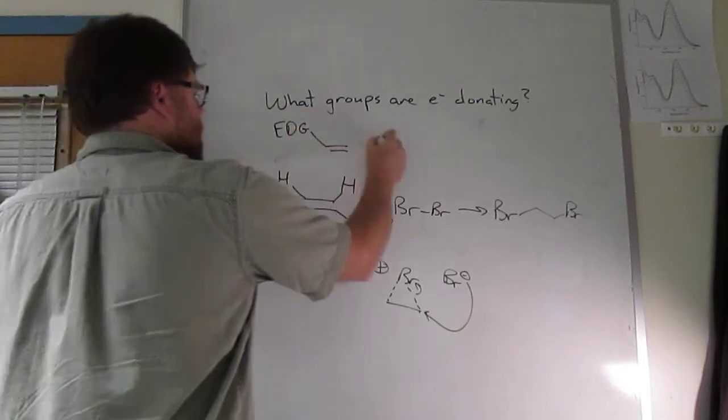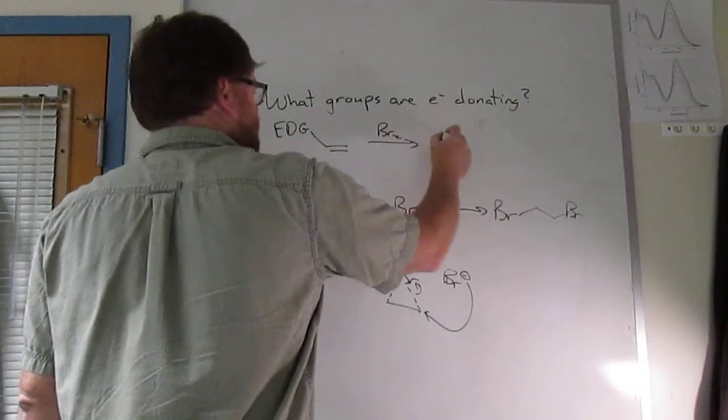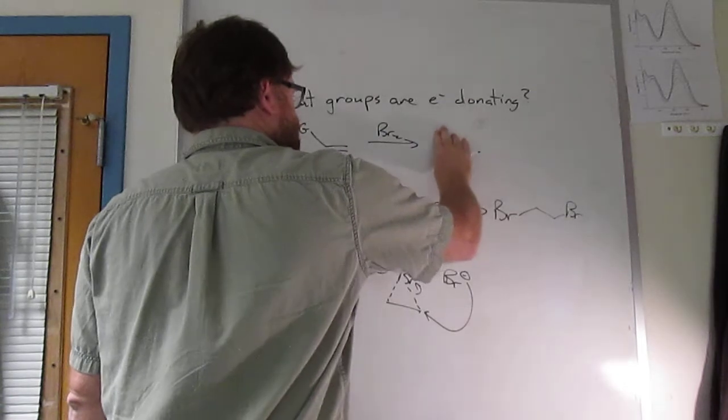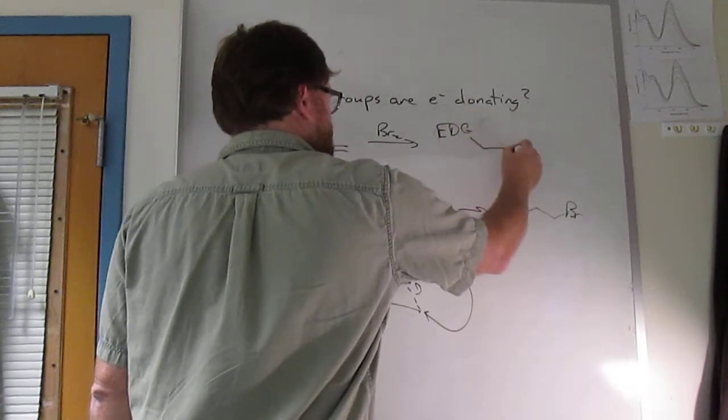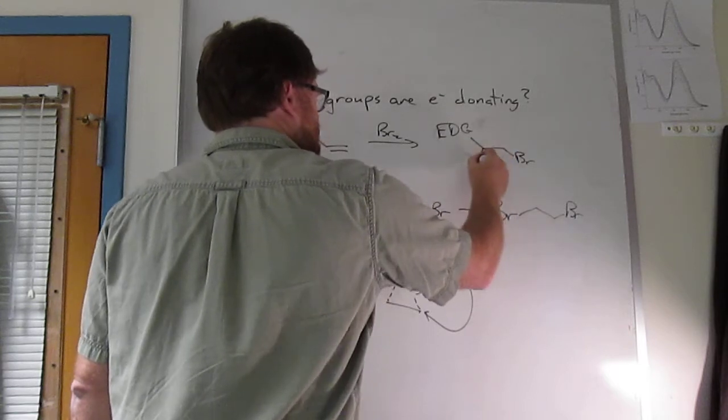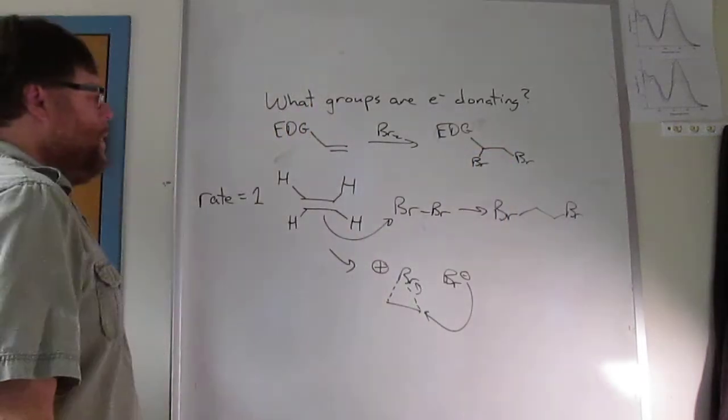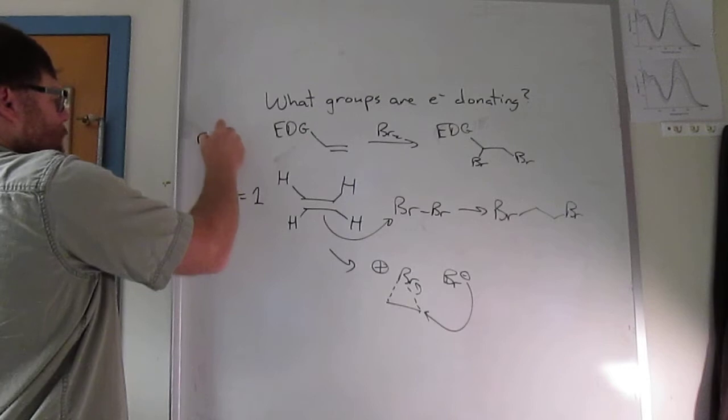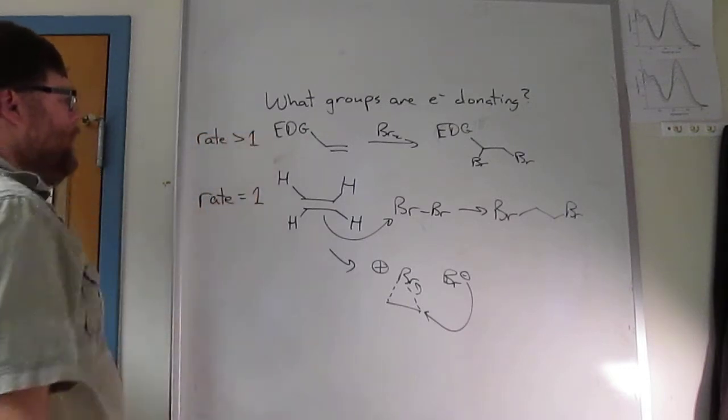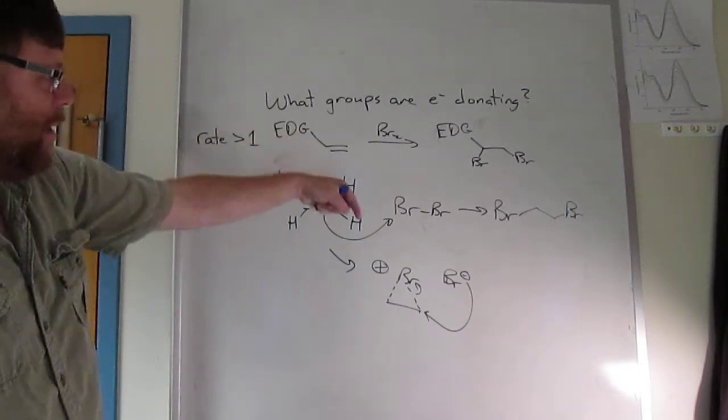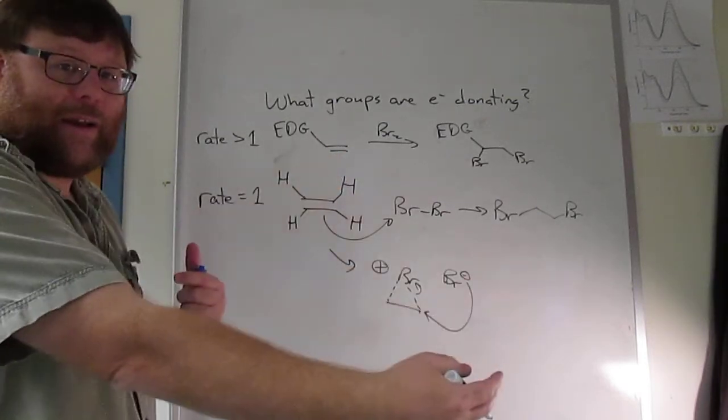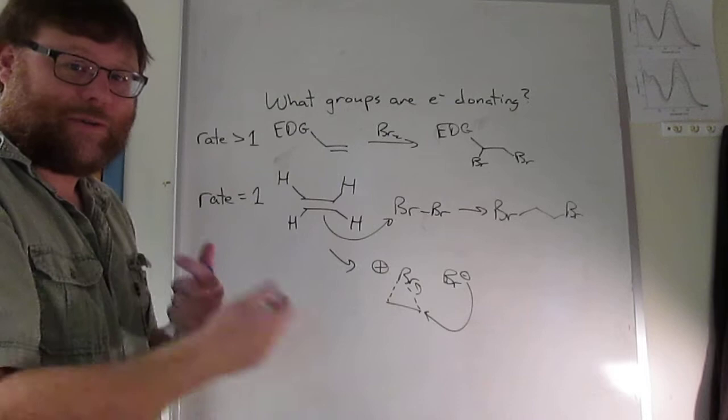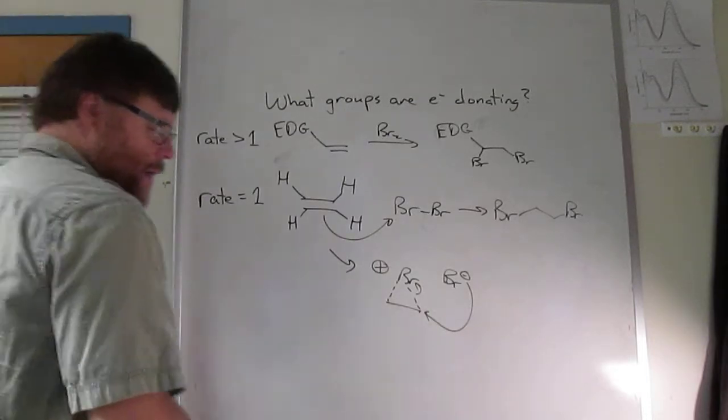If we have an electron donating group, treat this with bromine, this rate will be greater than one. The electron donating group is pushing electrons in, it makes this alkene more electron rich. The alkene is giving electrons away, so if it's richer in electrons, it can give them away faster.